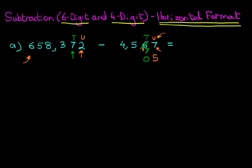Let's move across to the hundreds. How many hundreds do we have? We've got five hundreds. What is our target? We need to get to three hundreds, or more realistically the next three-units number is going to be 13. So what number added to the five is going to give us 13? Well, the answer is eight — five plus eight is 13. So we've done that and we've carried one over to the next column.